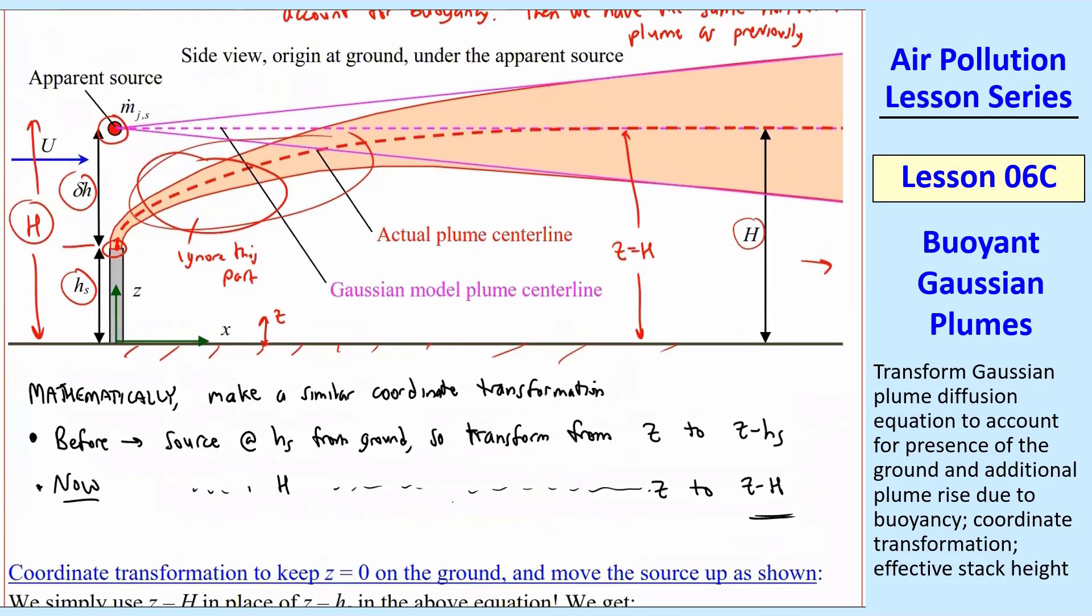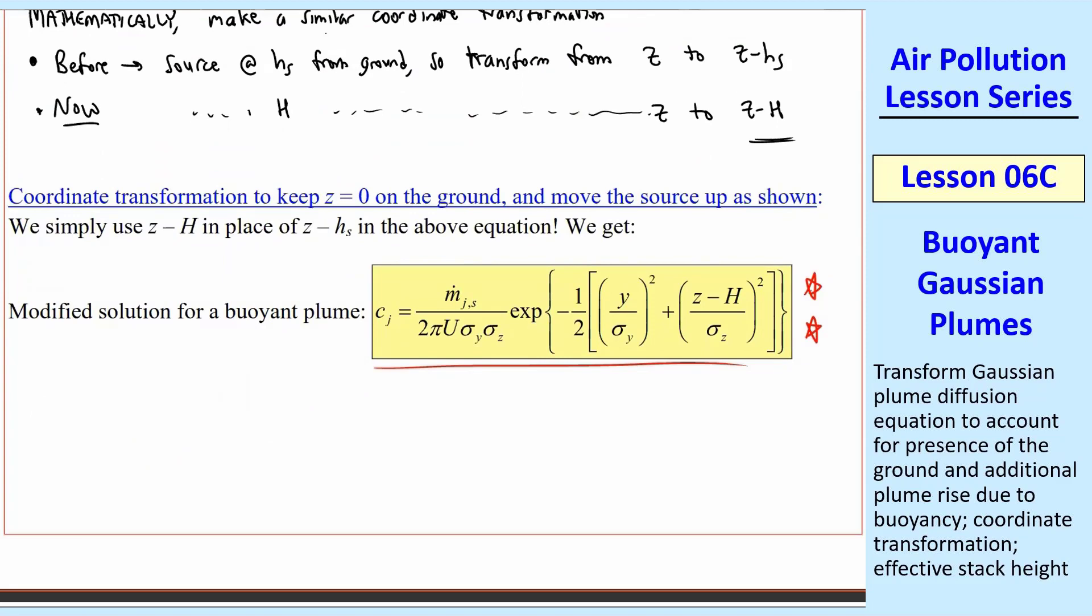Now, of course, we're not really accounting for buoyancy properly. We're just ignoring this part. But like I said, for far downstream, once this thing levels off, we do account for buoyancy simply by pretending the source is up here where it has leveled off. This is our final workhorse equation. We'll label this as the Gaussian plume equation with z equals zero at the ground and buoyancy included. And I should comment that we also have the same other restrictions that we had previously. And those are that we can only apply this between x equals zero and xg.